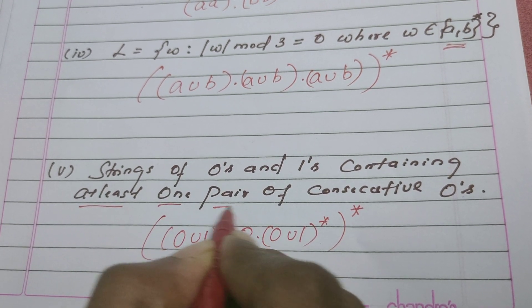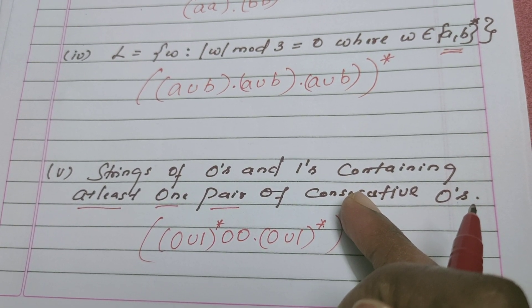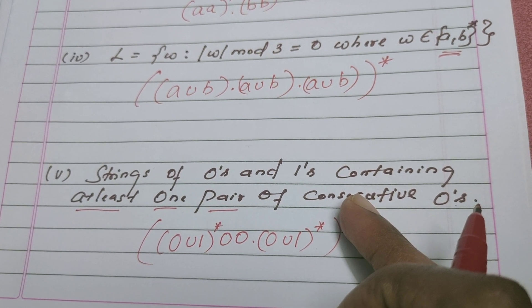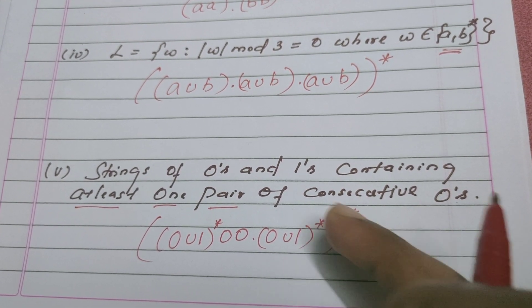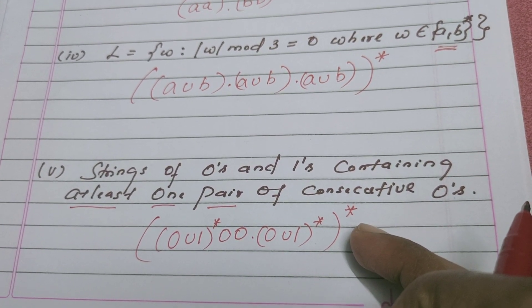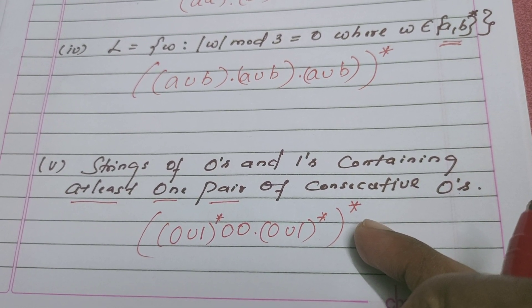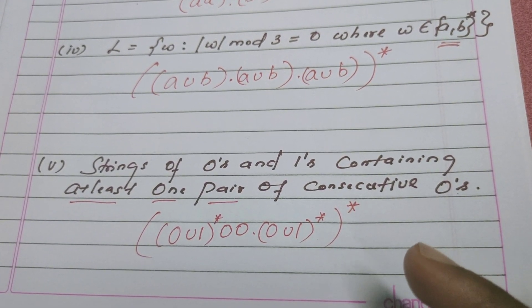So without this star it confirms there is one pair of consecutive 0. If you put one whole star, it says that there is more than one pair of consecutive 0's. That's all.